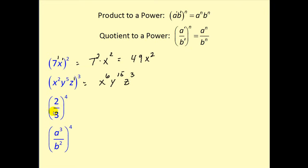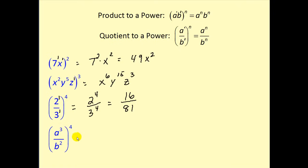The next example: whenever I don't see an exponent, I write it in as a one. I see powers raised to powers, so we'd have two to the fourth power divided by three to the fourth power. Since we can multiply this out, two to the fourth gives us sixteen and three to the fourth gives us eighty-one. For the last example, this would be a to the three times four, or the twelfth power, and b to the two times four, or b to the eighth power.